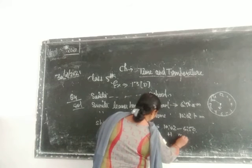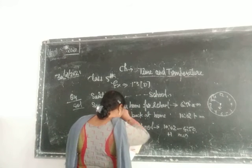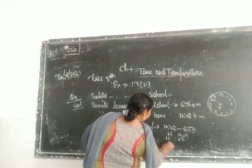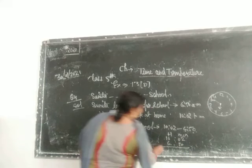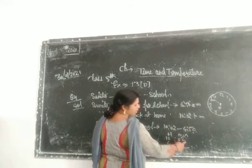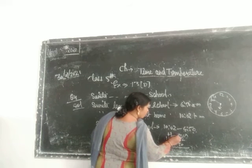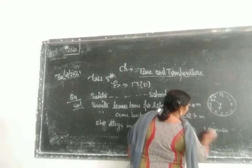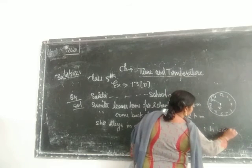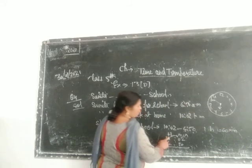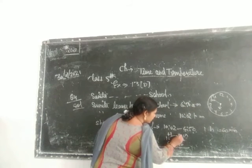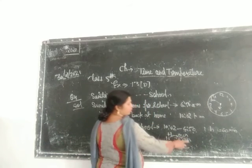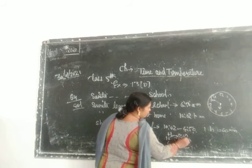These are minutes. Now, 10 past 2 is: hours 2, minutes 10, minus hours 6, minutes 50. The minutes column: 10 is shorter than 50, so we will take a borrow. 1 hour is equal to 60 minutes. When we borrow from the hours, we put 60 here, then plus 10, it will now be 70... so it will be 62.